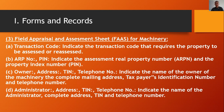Next, the Field Appraisal and Assessment Sheet (FAAS) for machinery. This is also included in our transaction code — we just require the property to be assessed or reassessed. You need to indicate the Assessment of Real Property (ARP) number and the Property Index Number (PIN).